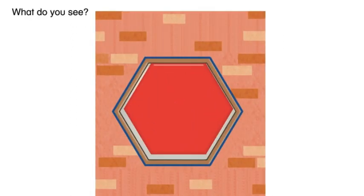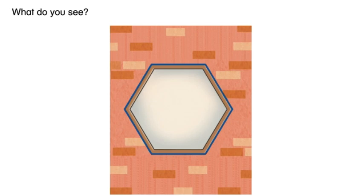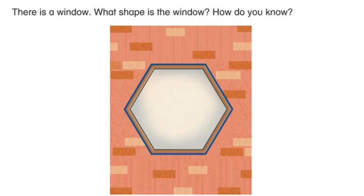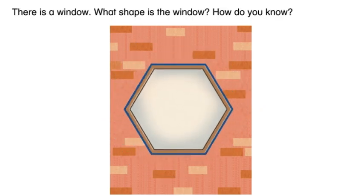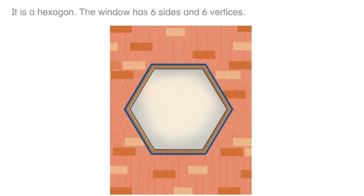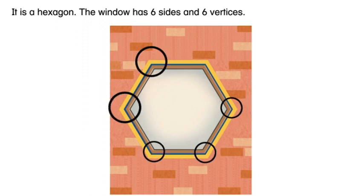What do you see? There is a window. What shape is the window? How do you know? It is a hexagon. The window has six sides and six vertices.